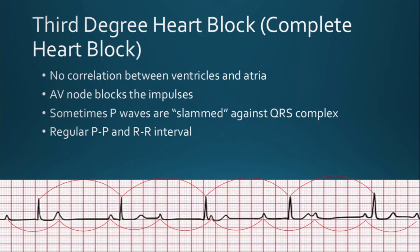One sign you might notice is a P wave slammed right against a QRS complex — that P wave is not far enough away to have conducted that QRS. You might also notice that the first T wave looks different from the others; the P wave gives it a more pointed appearance.